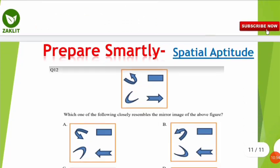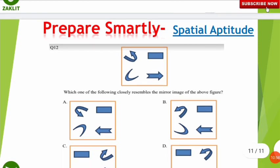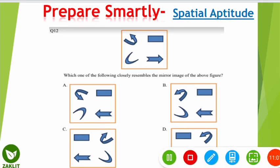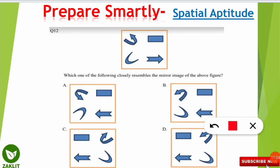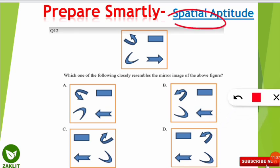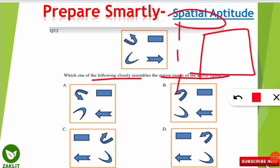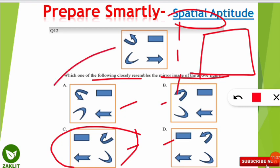Here is one more spatial aptitude example from the sample paper. A question asks: 'Which of the following closely resembles the mirror image of the given figure?' You analyze the four options to determine which image would appear when the figure is placed in front of a mirror. Since flipping the figure reverses all elements, option C is correct. These are all analytical and very easy to crack.